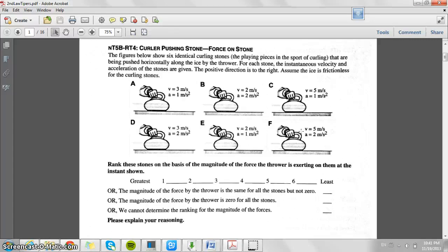Put that into the equation, and you'll find that D, B, and F with two meters per second squared are going to end up with a greater net force than A, E, and C.